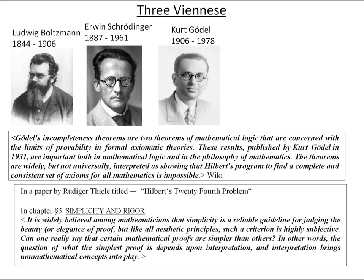In a paper by Rüdiger Thiele titled 'Hilbert's 24 Problems,' chapter 5 on simplicity and rigor states: it is widely believed among mathematicians that simplicity is a reliable guideline for judging the beauty or elegance of proof, but like all aesthetic principles, such a criterion is highly subjective. Can one really say that certain mathematical proofs are simpler than others? In other words, the question of what the simplest proof is depends upon interpretation, and interpretation brings non-mathematical concepts into play.